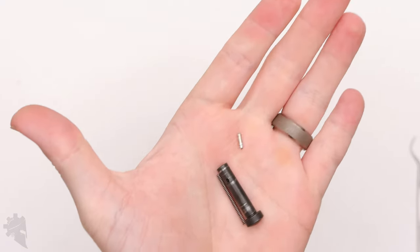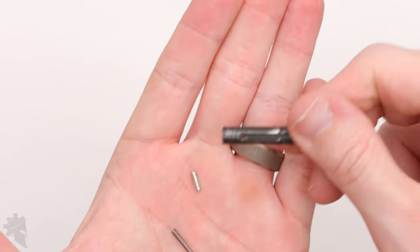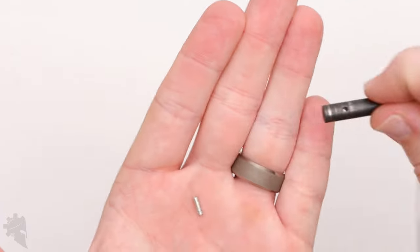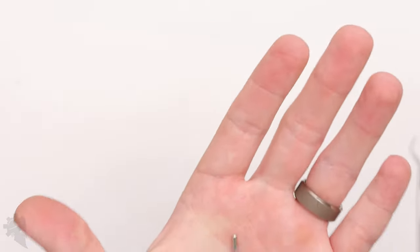That hole is going to capture the spring and the detent that interact with your takedown pin to hold it in place and prevent it from actually physically coming out of the rifle as you take it apart to clean it and disassemble it.